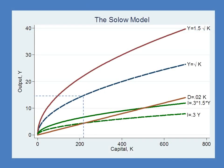This graph looks initially a little bit complicated, but it's really not. What this graph shows us is what happens when you increase productivity — when you increase ideas. Our previous model we can think of as A equals 1. Now let's suppose that A goes up to 1.5. This means that for every unit of capital you're now getting 50% more output from that unit of capital. Let's begin at our old steady state, 225 units of capital. Suppose that at this point we have an increase in productivity which increases A to 1.5.